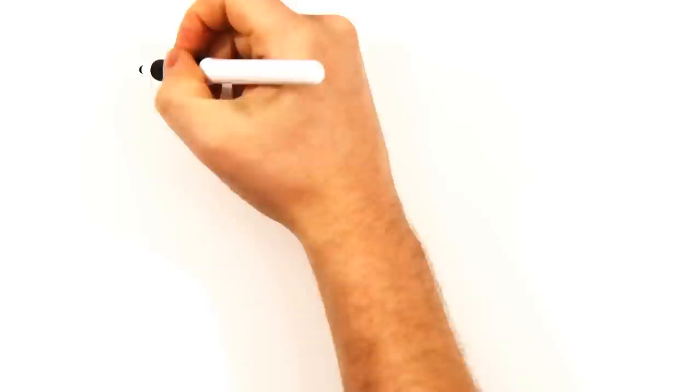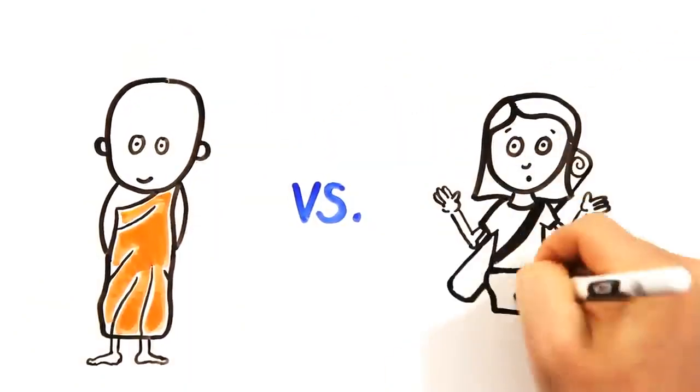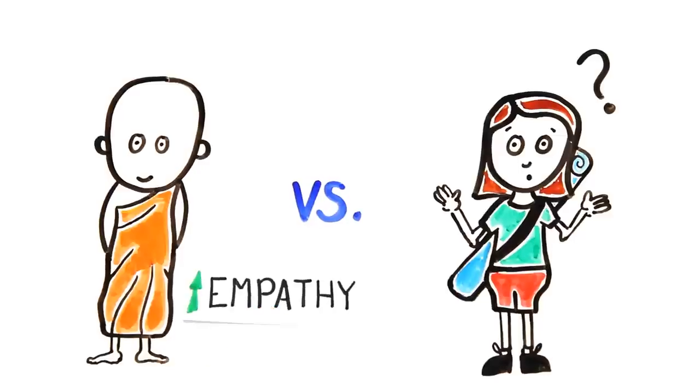Want to be more caring to your friends and family? When scientists compared the brains of Buddhist monks to new meditators, they found the region of the brain associated with empathy to be much more pronounced in the monks.